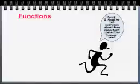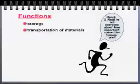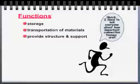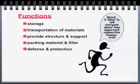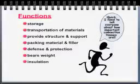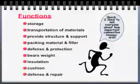What do they do? Because there are so many different kinds, they have a variety of different functions: storage, transporting materials around your body, providing structure and support, acting as packing material and filler between organs and structures, defense and protective functions, helping bear your body weight, insulating, cushioning, and also playing a role in defense and repair. So, huge numbers of functions — really important tissue type.